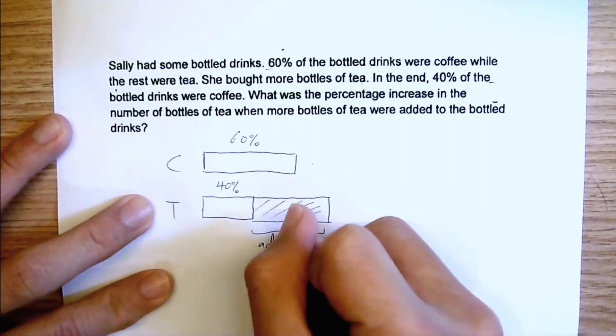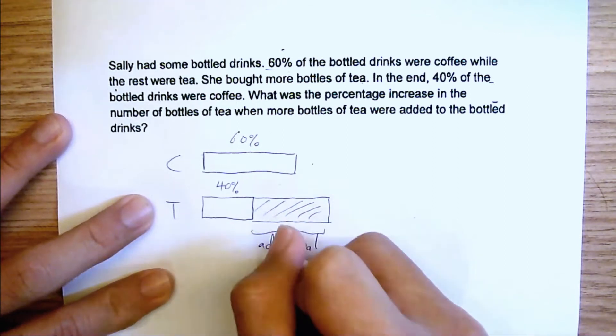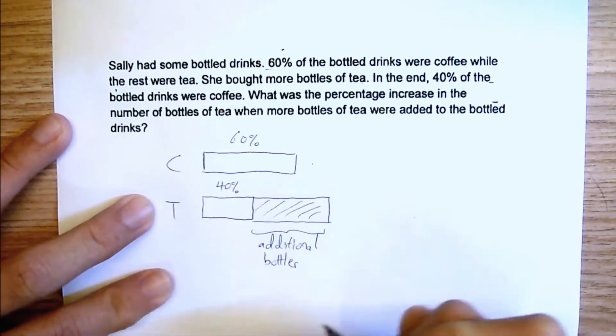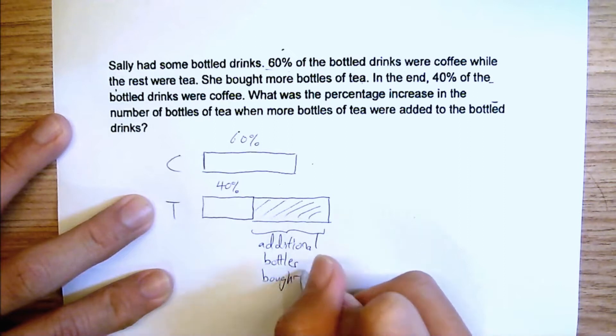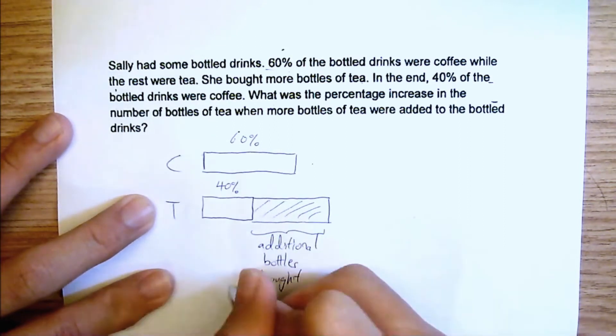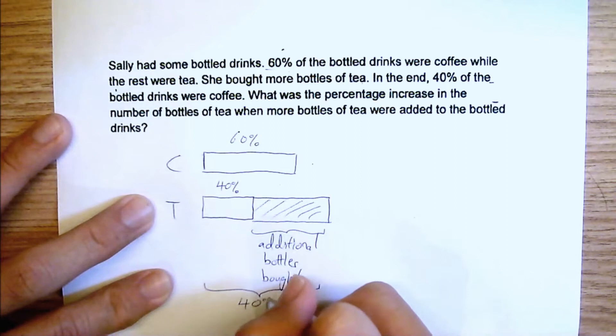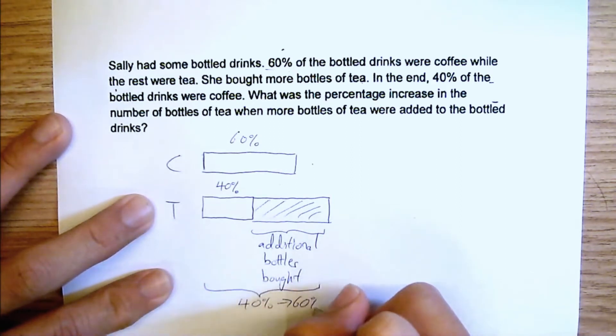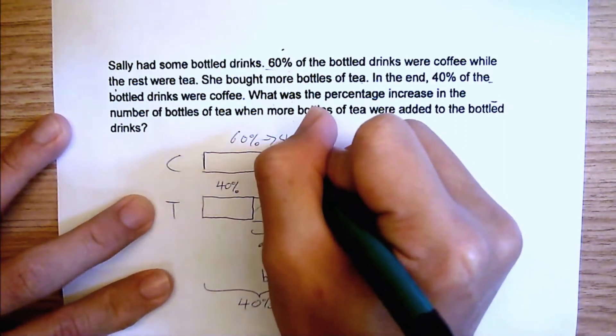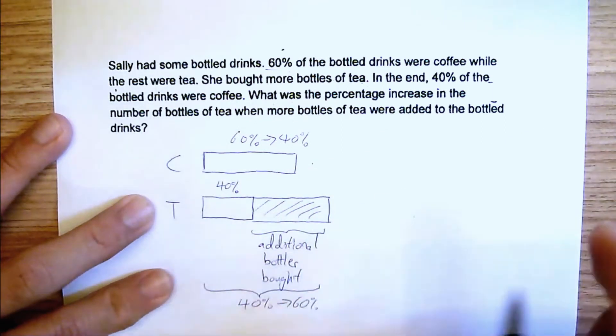So I'm going to put here additional bottles bought. After she bought this, the entire figure here from 40% increased to 60% because this one became 40%.